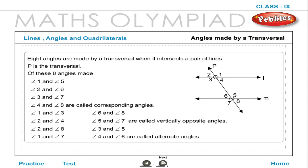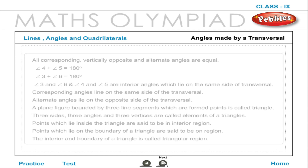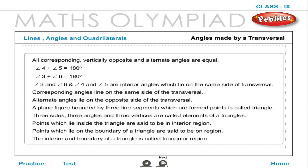Angle 2 and angle 8, angle 3 and angle 5, angle 1 and angle 7, angle 4 and angle 6 are called alternate angles. All corresponding, vertically opposite, and alternate angles are equal.